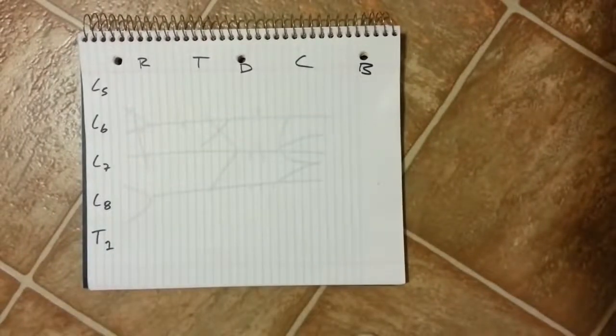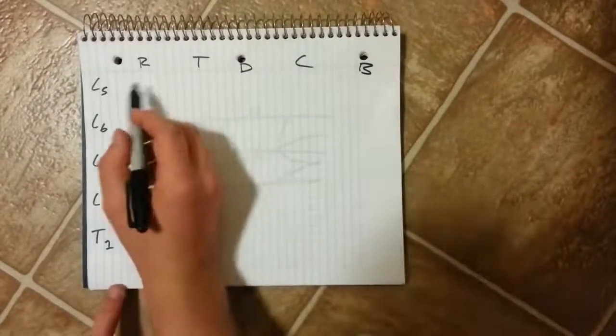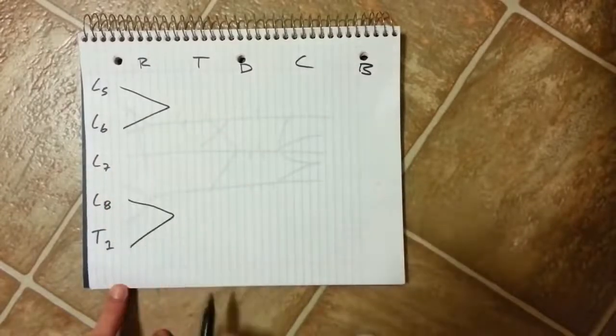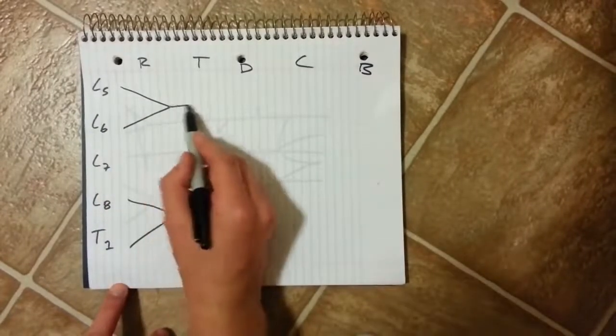The easiest way to draw the brachial plexus is to draw two peaks first and then three horizontal lines.